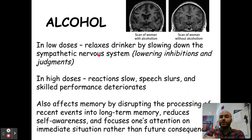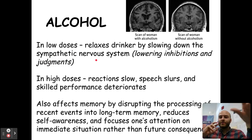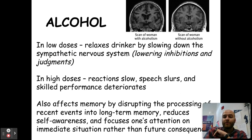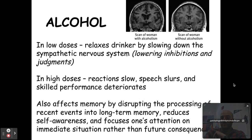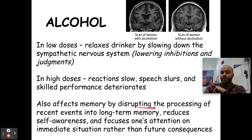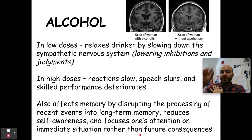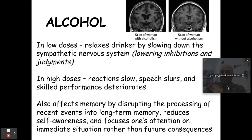First, you have alcohol. In low doses, it relaxes the drinker by slowing down the sympathetic nervous system — our fight-or-flight response — which lowers our inhibitions and judgment. We're slower, not as fearful, less inhibited. In high doses, reactions are even slower, speech slurs, and skilled performance deteriorates. We've also seen effects on memory by disrupting the translation of recent events into long-term memory. When people drink way too much, their hippocampus effectively stops working and doesn't take in new memories — that's blackouts. It also reduces self-awareness and focuses attention on the immediate situation rather than future consequences.